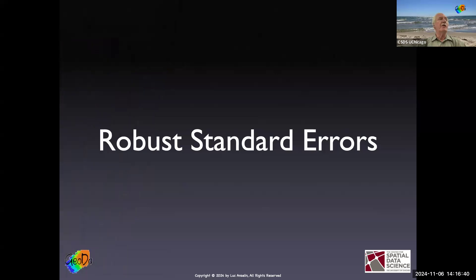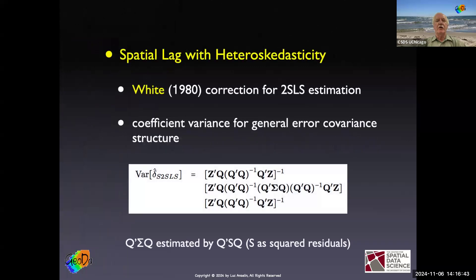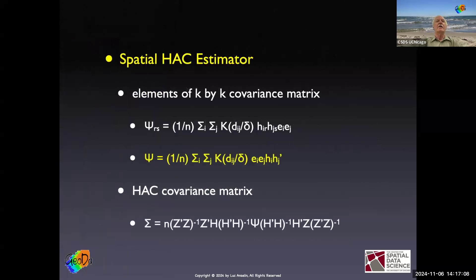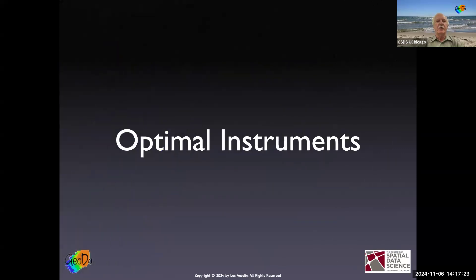Robust standard errors. I can do this fairly quickly, because it's the same as what we've seen before. So we can do the spatial lag model with heteroscedasticity of unknown form. It's exactly the same approach as we did for two-stage least squares, or for that matter, for OLS, the robust standard errors. So as before, it looks formidable. It's actually not that difficult to set up. And then we can also do the HAC estimator. Same way, kernel function, get the covariance matrix, plug that in, and we get this very complicated expression. But at the end of the day, they're just additional standard errors.